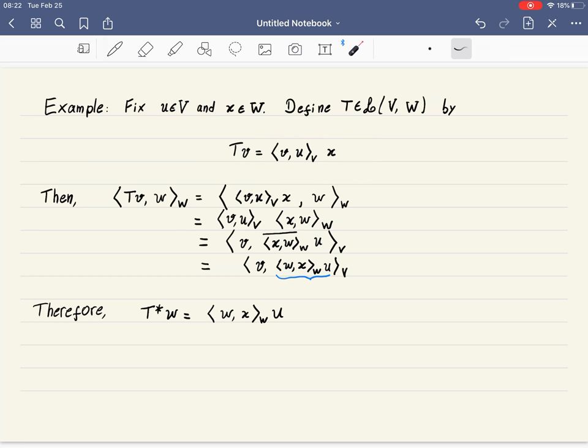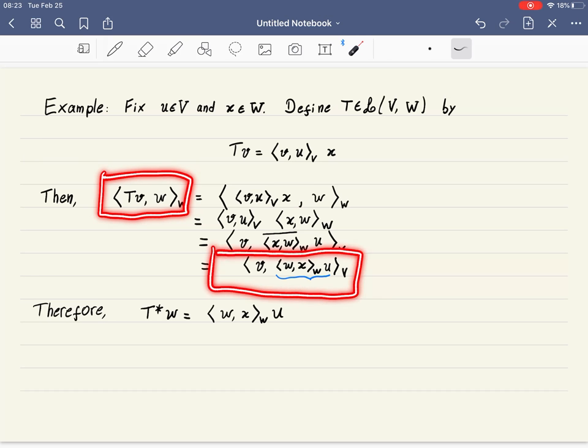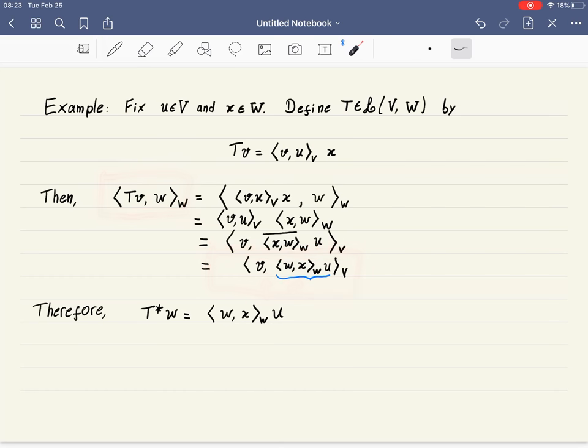Then we want to find the expression for T star. We start with T V, W and want to get something that has V on the left. Whatever we find on the right will be T star W, with the inner product in W here and the inner product in V here.